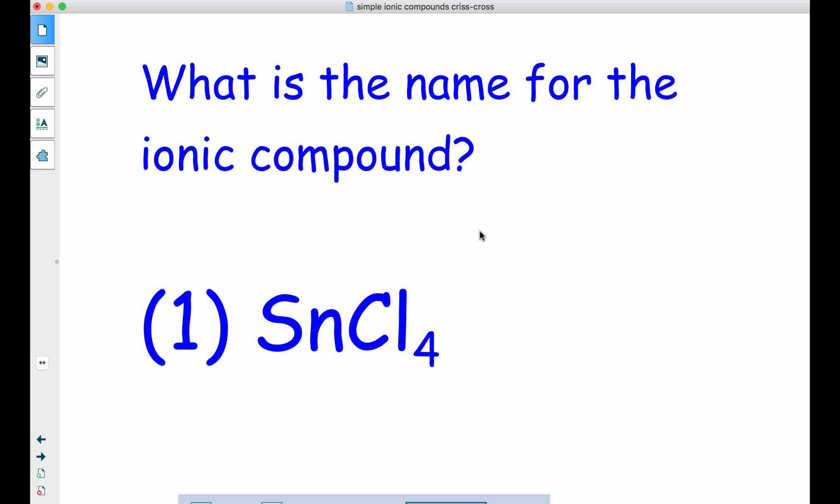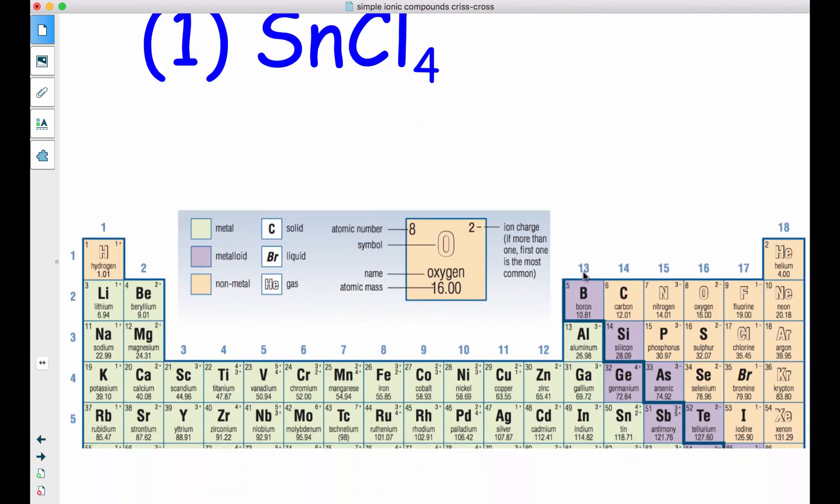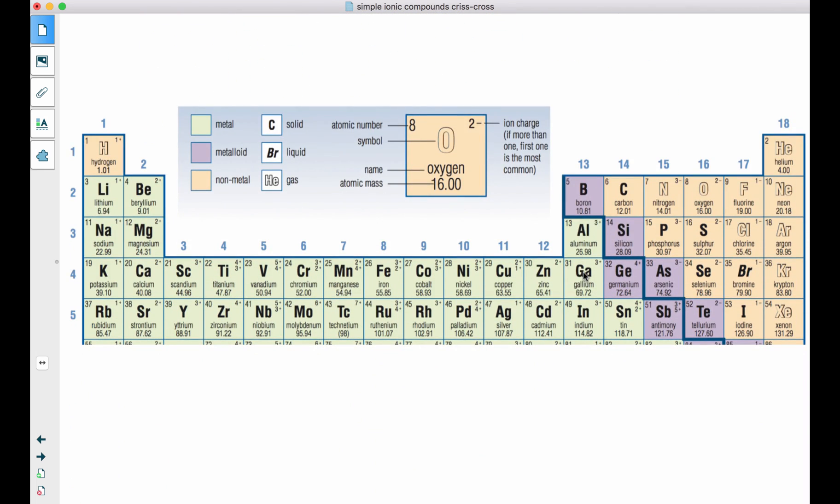So now we can also go the other way, which is to have a chemical formula written out and now we need to name it. So this is Sn, which is tin. And this is chlorine. So this would be some kind of a tin chloride. Now if we look at our periodic table and we find tin, which is right here, tin can either be a 4+ or a 2+.